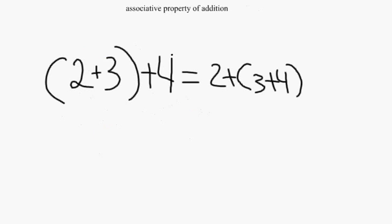Associative Property of Addition: The change of grouping 3 or more addends does not change the sum. Example: parentheses 2 plus 3, plus 4 equals 2 plus parentheses 3 plus 4. In these examples, PEMDAS says to do parentheses first.